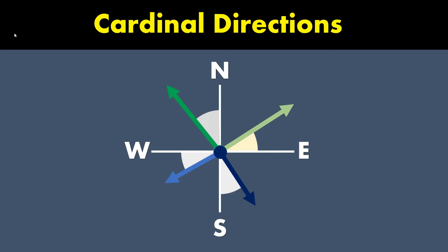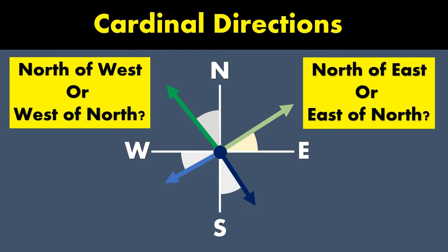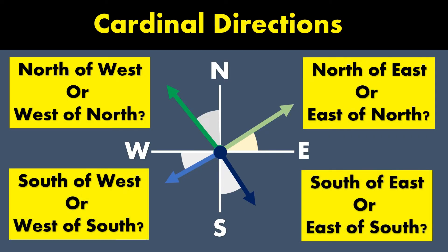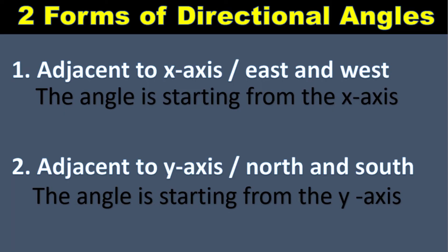How do we know if it's north of east or east of north, north of west or west of north, south of west or west of south, and south of east or east of south? Let us start by knowing first the concept behind the naming of directional angles. There are two types: one is an angle adjacent to the x-axis, or east and west; the other is an angle adjacent to the y-axis, or north and south.